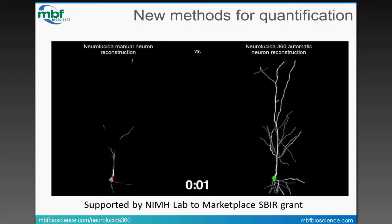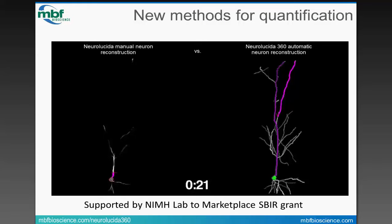You're likely familiar with Neuralucida, our flagship product. It was introduced in 1989, and it revolutionized the field of neuroanatomy by digitally representing the structure of neurons in 3D. From its inception, MBF Bioscience has been a pioneer in developing and improving microscope and computer-based scientific research systems. Neuralucida has continually evolved as a powerful system that has been cited in over 5,000 research papers.